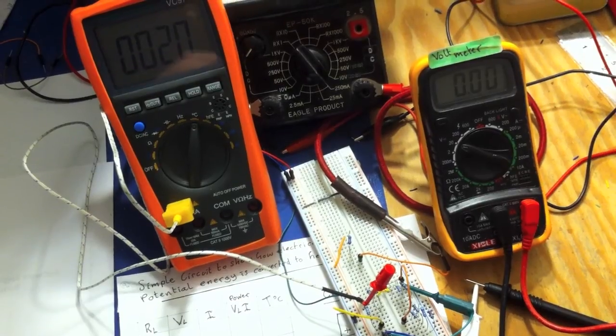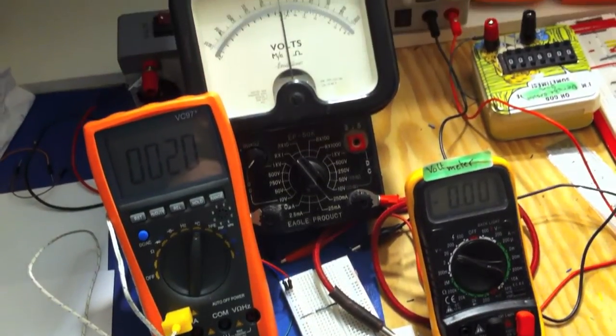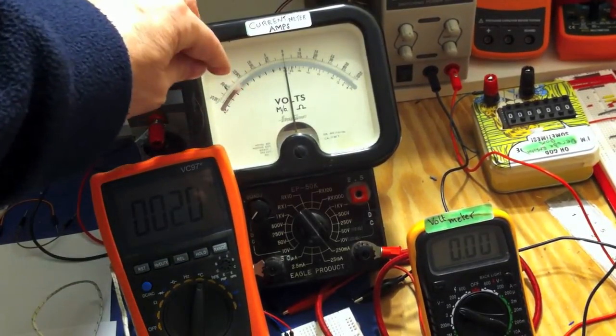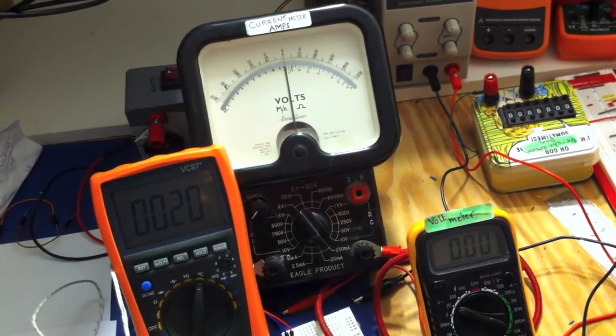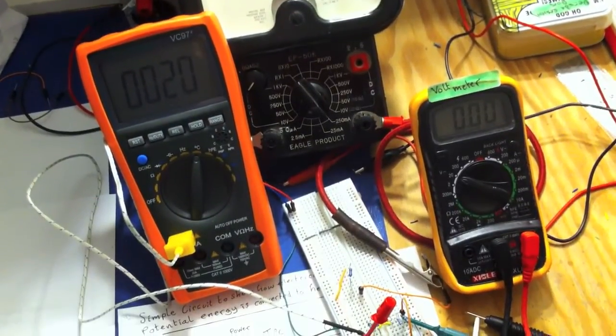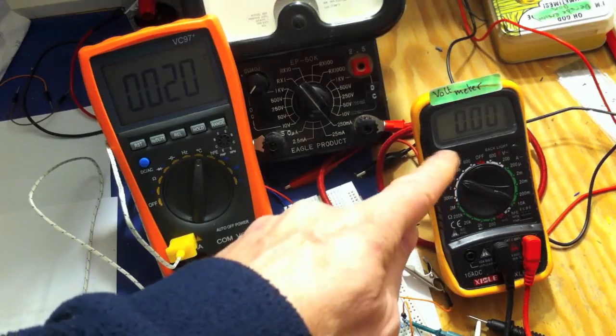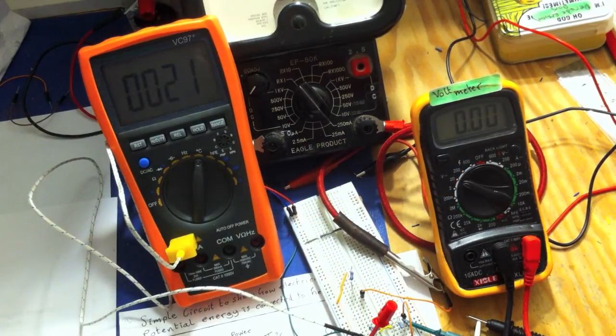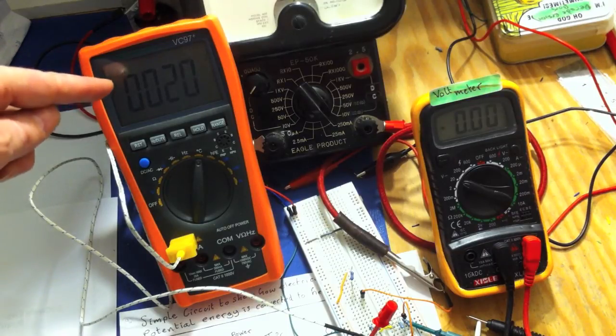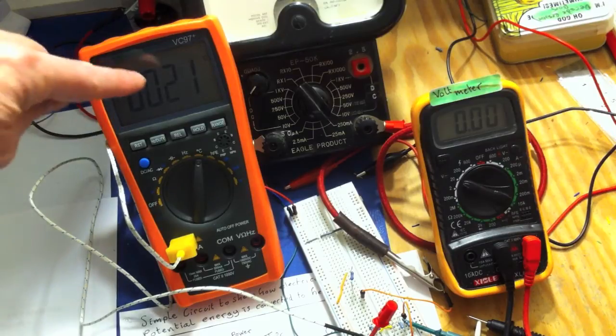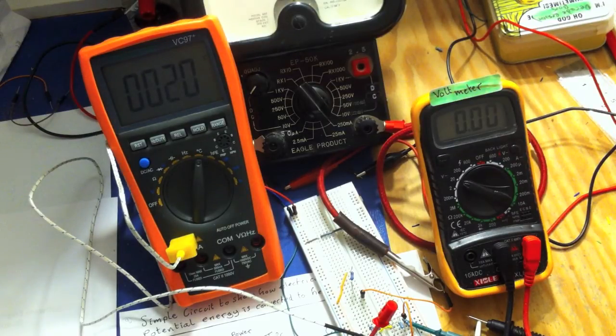Here's the setup. I've got a current ammeter that's measuring the current through the simple circuit. To the right we're measuring the voltage across the load resistor. On the left, this indicates the temperature. At the moment it's showing 20, 21 degrees.